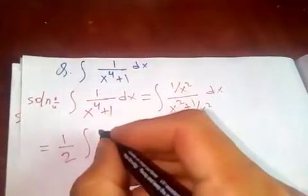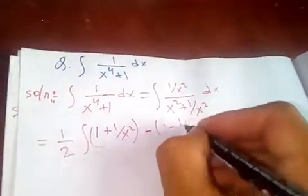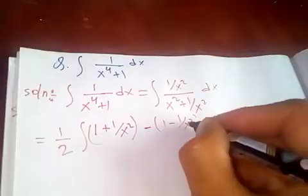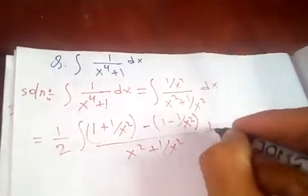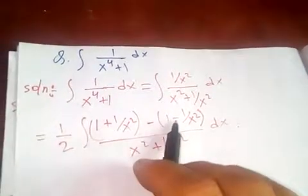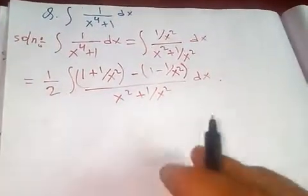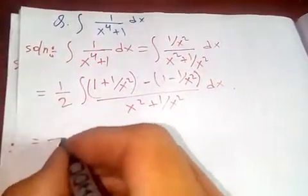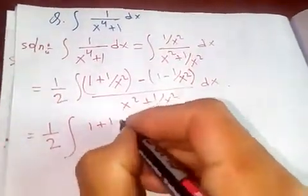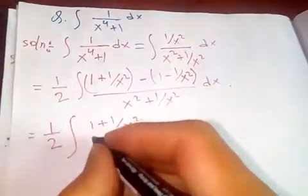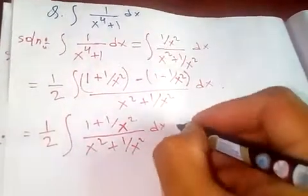Now let's simplify this. Let me take half in common. So the integral of this will be: 1 plus 1 over x squared, minus 1 minus 1 over x squared, all divided by x squared plus 1 over x squared, dx. If you open the bracket, the two halves combine and you get back this one.